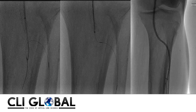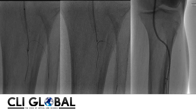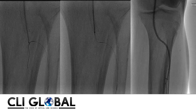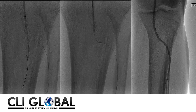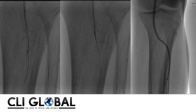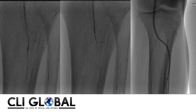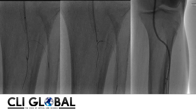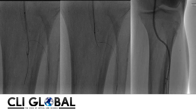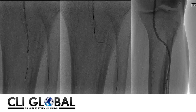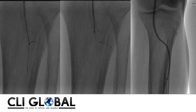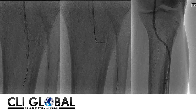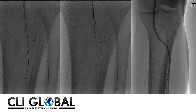We retrieved the wire through our snare and advanced it into our Navicross catheter from the anterior tibial artery. What you see on the right side of the screen is balloon angioplasty being performed through the popliteal artery into the anterior tibial artery.